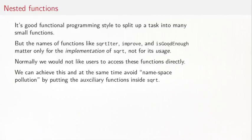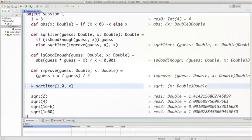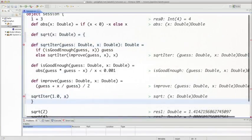One way we can achieve that is to put these auxiliary functions inside the function square root. Let me show that, use that with the worksheet. What we have here so far is all these functions are separate and visible on the top level. So what I want to do now is I take my definition of square root and I wrap it around the functions that are on the inside here. So I do it like that, I reformat.